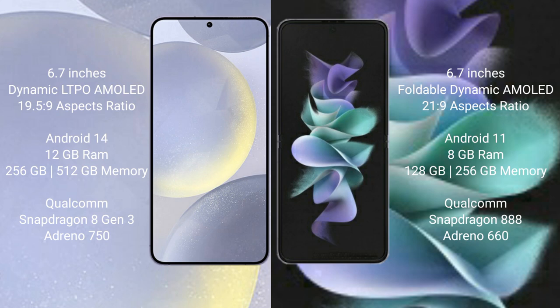Samsung Galaxy S24 Plus runs on the Android 14 operating system. It comes with 12GB RAM and 256GB or 512GB internal storage, with a Qualcomm Snapdragon 8 Gen 3 processor.